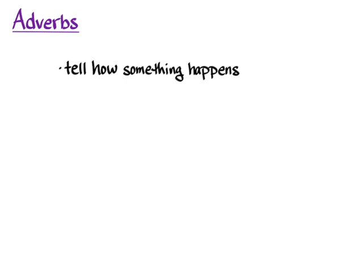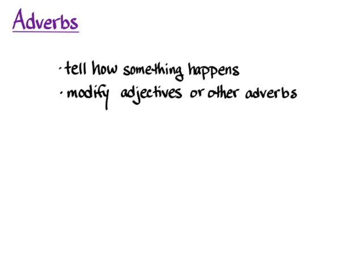An adverb is a part of speech that tells how something happens, or modifies adjectives or other adverbs. In English, our default way of forming them is with -ly. So if we have an adjective 'just', all we have to do is add -ly and we get the adverb 'justly'.